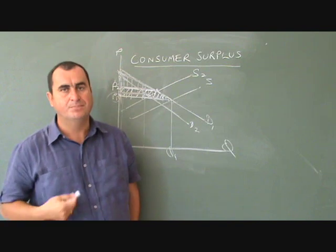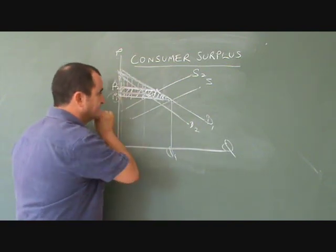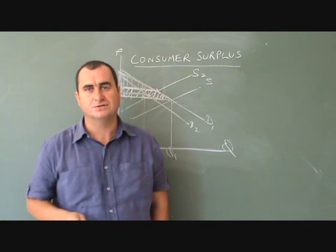But it's always that area, bordered by the demand curve, the price axis and the price level. Always that area. That's consumer surplus.